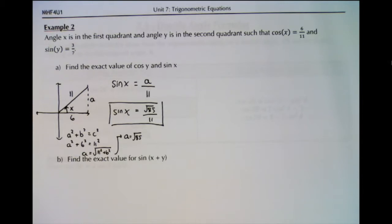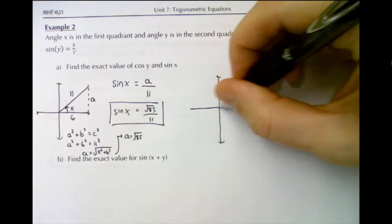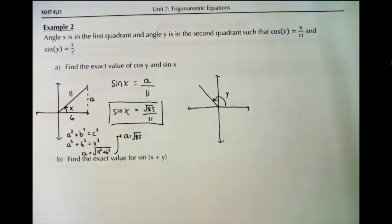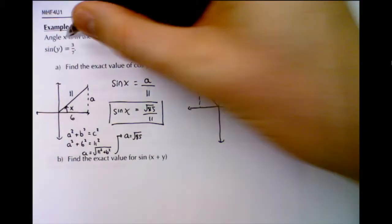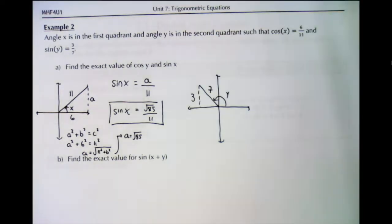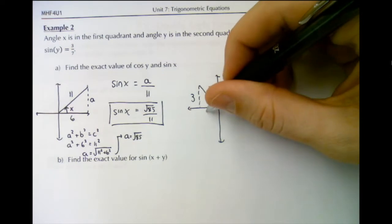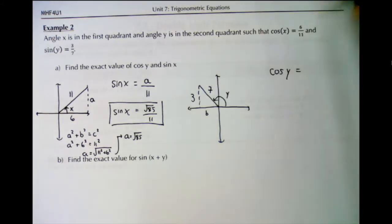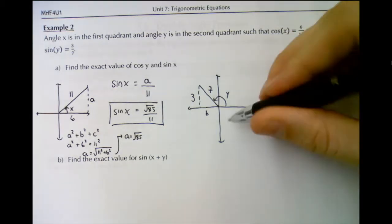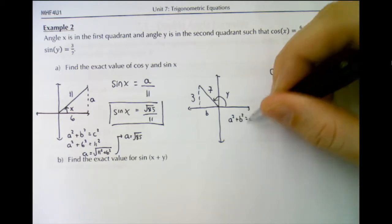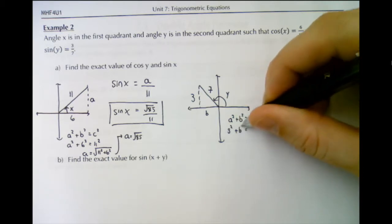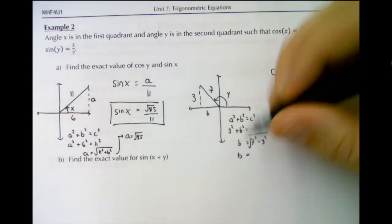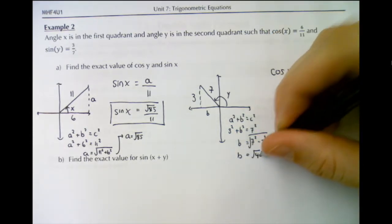Now we can do the same thing for cos y. Angle y is in the second quadrant, so let's graph an angle in the second quadrant. We know that sine y is 3 over 7 — sine is opposite over hypotenuse, so opposite is 3 and hypotenuse is 7. We need to find the unknown side b to determine cos y, which would be adjacent over hypotenuse, or b over 7. Using the Pythagorean theorem: 3 squared plus b squared equals 7 squared, so b equals the square root of 40.